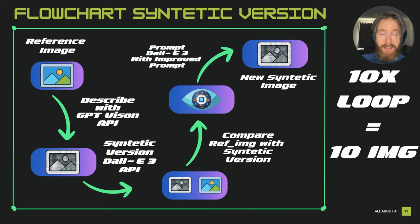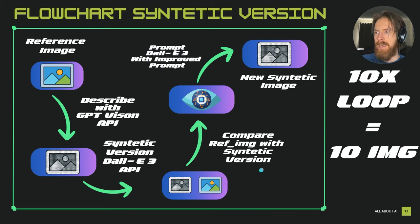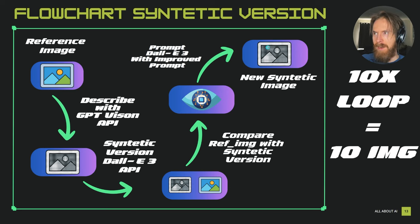Let's start by looking at the flowchart for this system. The first thing we need is a reference image — this image is fed into the GPT Vision API, which generates a description. We then feed that description into the DALL-E 3 API as a prompt, and hopefully we get a synthetic version of the reference image. The next step is to take the original reference image, compare it with the synthetic version using GPT Vision again to improve the prompt, feed that improved prompt back into DALL-E 3, and get a new synthetic image. This creates a loop — I've set it to 10 iterations, giving us 10 synthetic images.